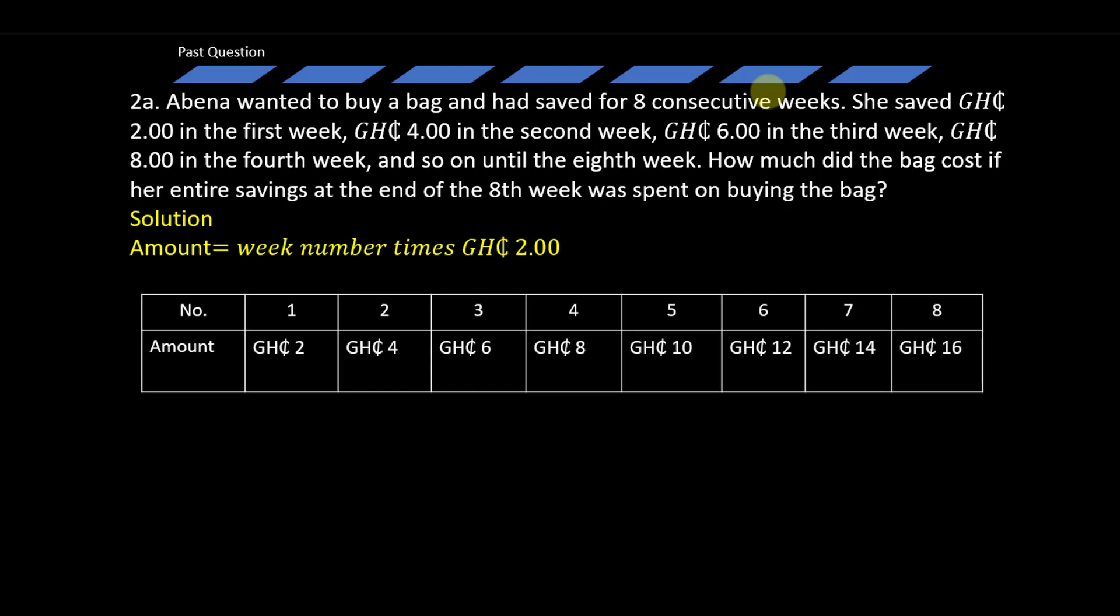We can therefore complete a table for each particular contribution until the eighth week. Week 1, 2 Ghana cedis. Week 2, 2 Ghana cedis times 2 gives us 4 Ghana cedis. Week 3, 3 times 2 Ghana cedis gives us 6 Ghana cedis. Week 4, 4 times 2 Ghana cedis gives us 8 Ghana cedis. Week 5, 5 times 2 Ghana cedis gives us 10 Ghana cedis. Week 6, 6 times 2 Ghana cedis gives us 12 Ghana cedis. Week 7, 7 times 2 Ghana cedis gives us 14 Ghana cedis. And week 8, 8 times 2 Ghana cedis gives us 16 Ghana cedis.